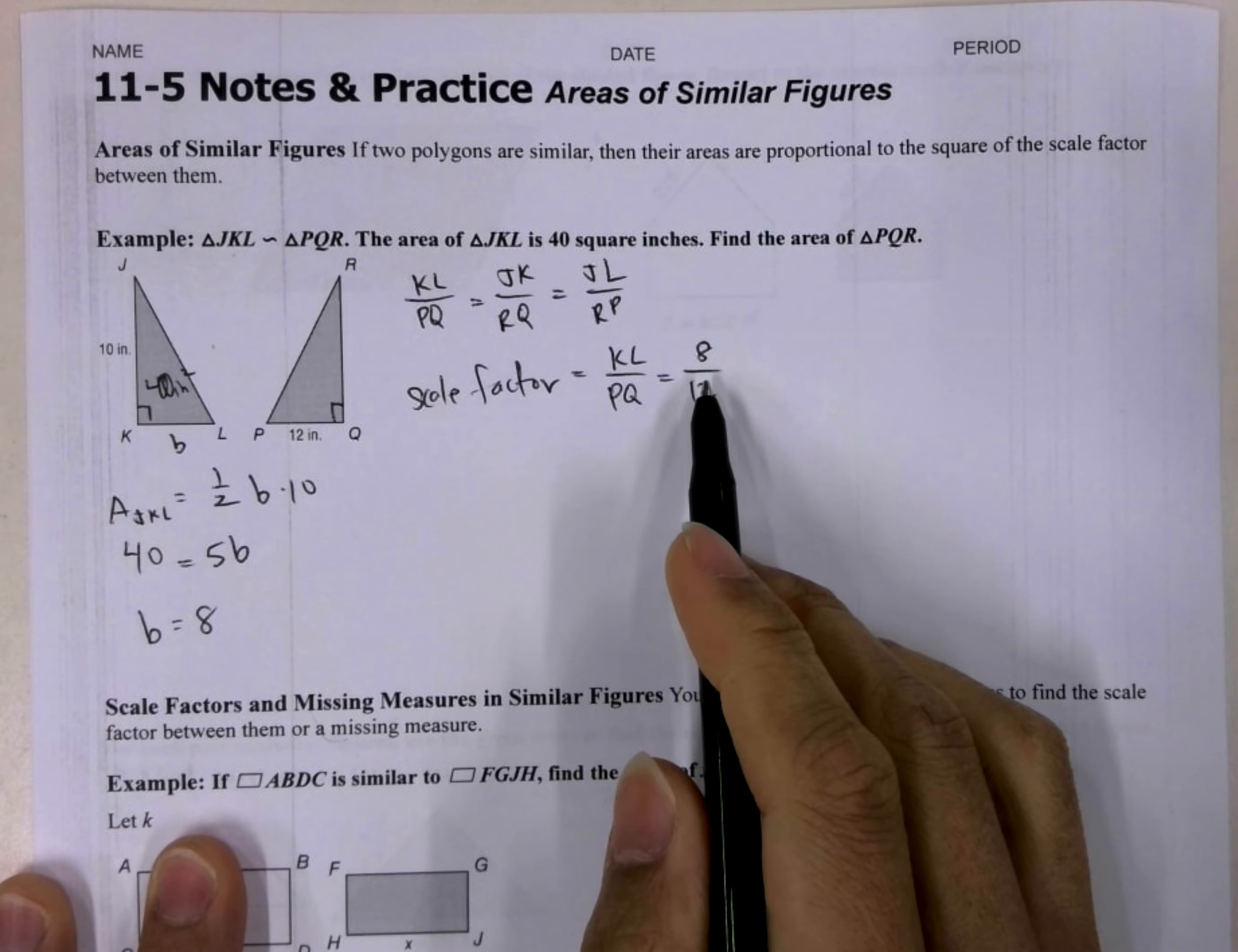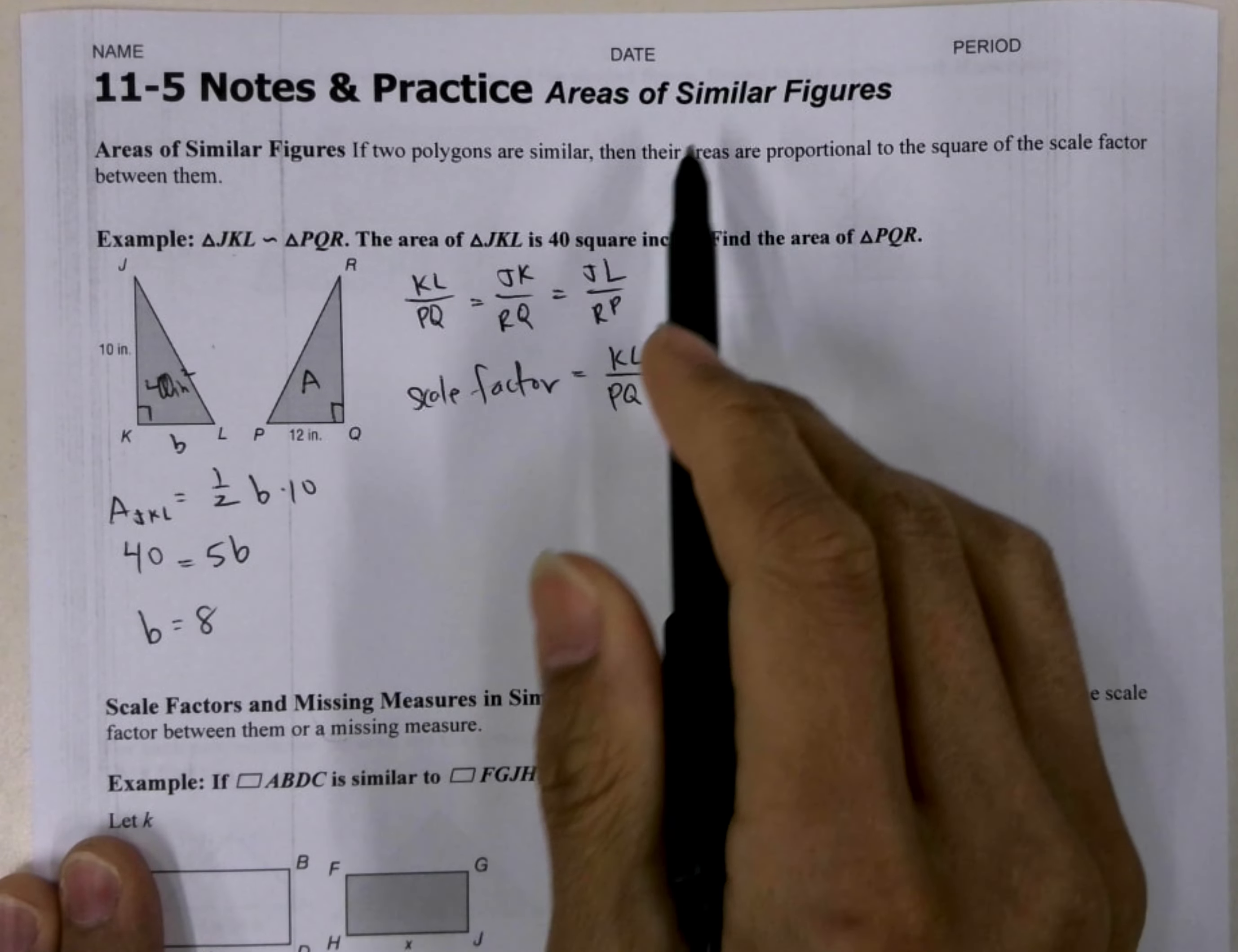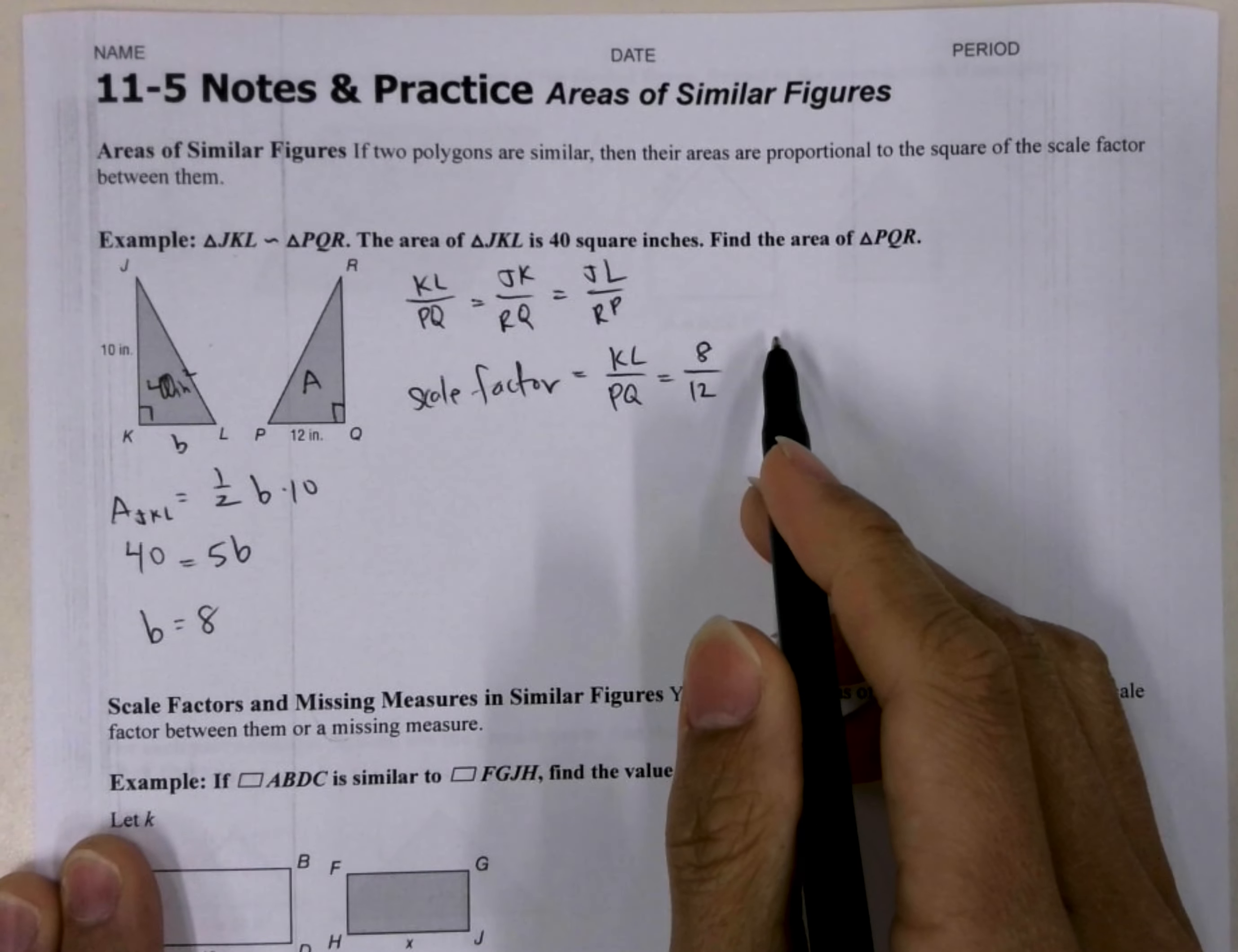And so how does this work? Well, we don't know the area of this triangle. So we've got area, which is unknown, of the PQR. But we know that their areas are proportional to the square of the scale factor between them. So here's a scale factor between them, and they're proportional to the square.